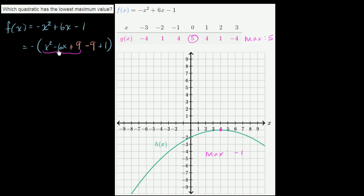This x² - 6x + 9 is (x - 3)². So I can rewrite that part as (x - 3)². And then -9 plus 1 is -8.